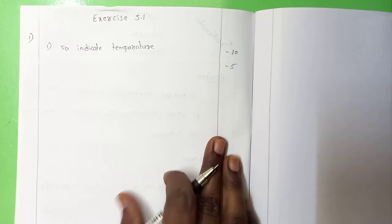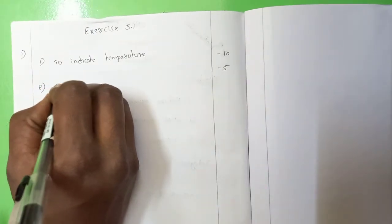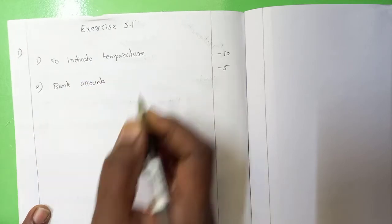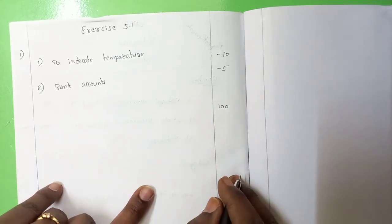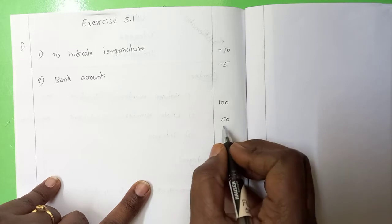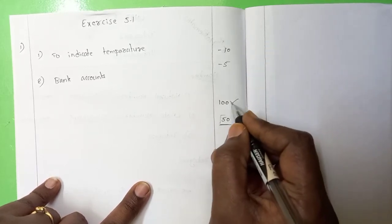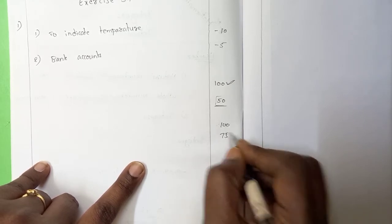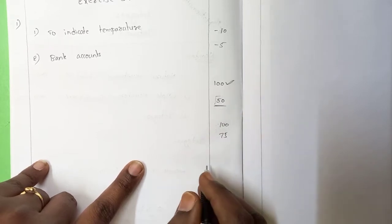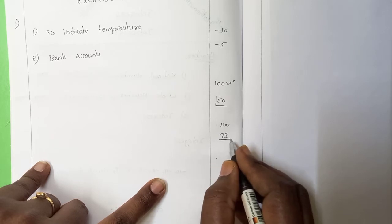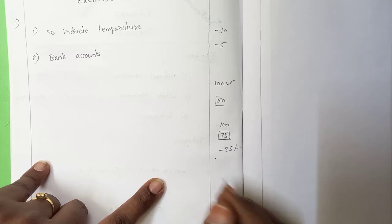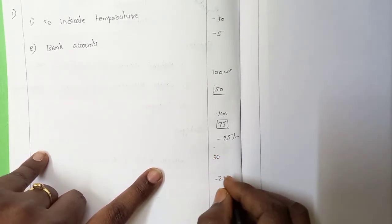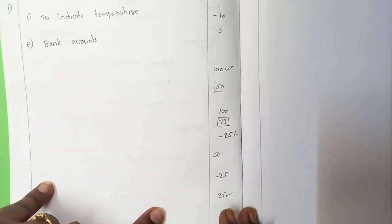Any other situation where we see negative values? In bank accounts also we see it. Sometimes in a bank we have to maintain at least 100 rupees. But if we withdraw 50 rupees the bank balance will be 50. But the minimum amount should be 100 rupees and we have only 50. Then what will they do? They will charge 75 rupees from the account. But the account already has only 50 rupees, so they will keep our account as minus 25 rupees. Next time when you deposit 50 rupees, the bank will take 25 rupees and there will be 25 rupees in our account.